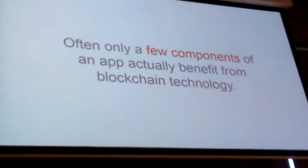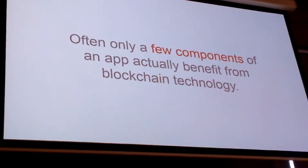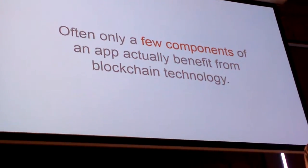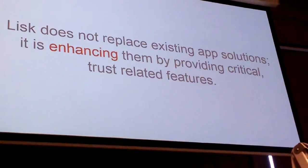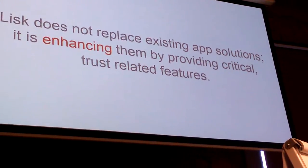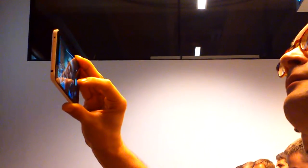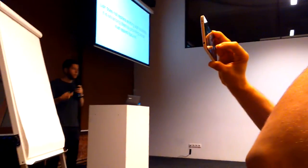Why do I differentiate between blockchain apps and blockchain services? It's because often only a few components of an app actually benefit from blockchain technology. Lisk does not replace existing app solutions — it enhances them by providing critical trust-related features. You don't need to have something like WhatsApp completely decentralized. Maybe you just want to have the encryption layer on a decentralized trustless network, or you want to have the usernames or contact data on an encrypted network. Decentralized always means extra work — it's not the most efficient way of doing things, because you have to work for decentralization. Centralizing is quite easy and very fast and efficient.